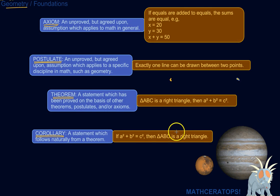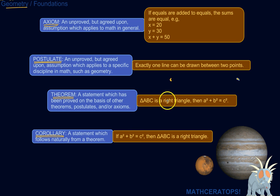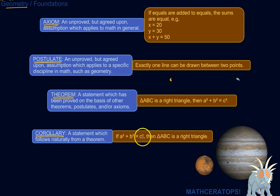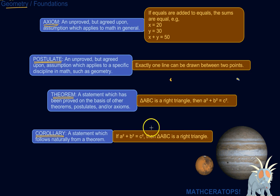Here's an example — it's actually the converse of the Pythagorean theorem. So if triangle ABC is a right triangle, then a squared plus b squared equals c squared. Well, from that we can see that if we've got three side lengths and they have this relationship — a squared plus b squared equals c squared — then that triangle must be a right triangle. It just follows naturally from the theorem.